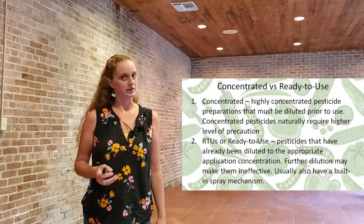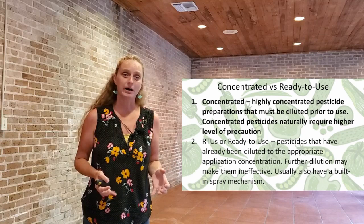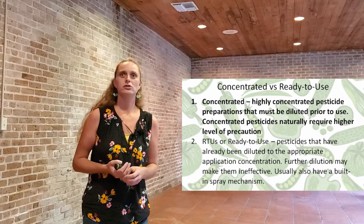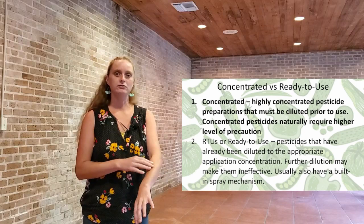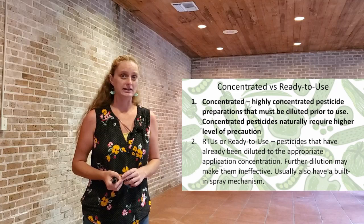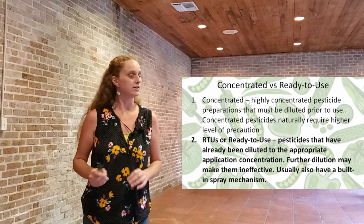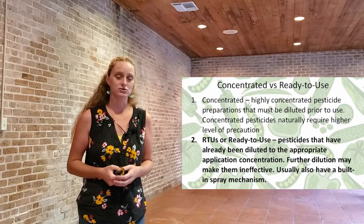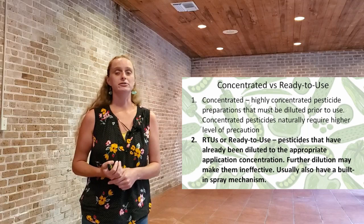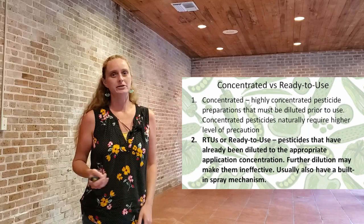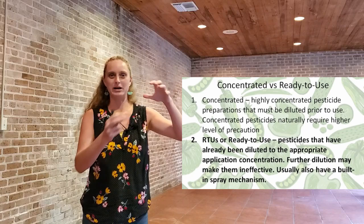Concentrated versus ready-to-use products is also something to consider. Concentrated products must be diluted prior to use — they must be mixed in a spray tank. Concentrated pesticides usually require a higher level of precaution because the active ingredient is hyper-concentrated, so if you get a little on you or accidentally spill, there's going to be a lot more of that active ingredient. Ready-to-use products have already been diluted to the appropriate application concentration by the manufacturer. Further dilution at that point might make them ineffective, and they usually have a built-in spray mechanism.